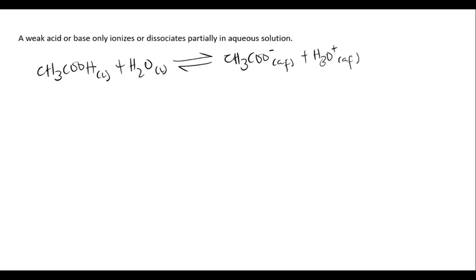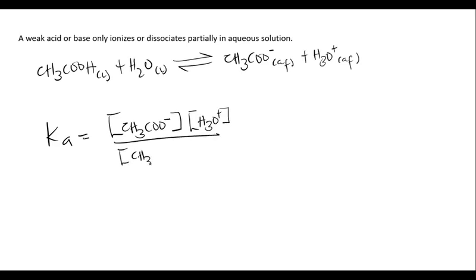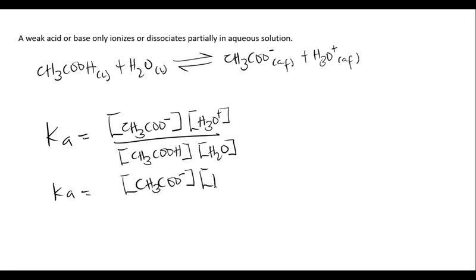The Ka, or acid dissociation constant, of any weak acid is written as: Ka equals the concentration of the ions formed in aqueous solution — which is the acetate ion CH₃COO⁻ multiplied by the hydrogen ion concentration H₃O⁺ — divided by CH₃COOH. We neglect the concentration of water, giving us Ka = [CH₃COO⁻][H₃O⁺] / [CH₃COOH].